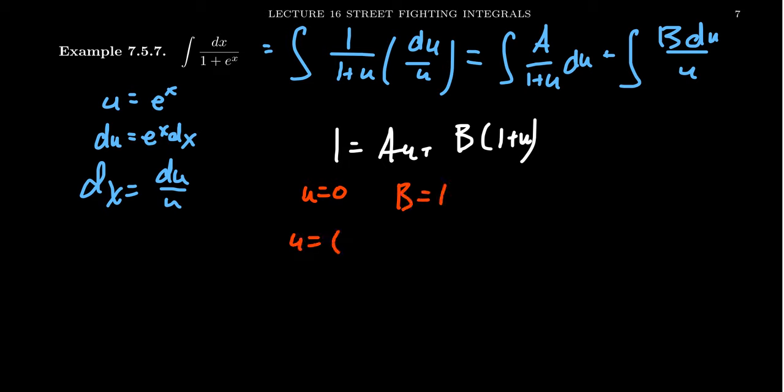If you stick in u equals negative 1, that annihilates the b. And so then we see that negative a equals 1. So a negative 1 plus u equals 1 plus u. That works out just great.